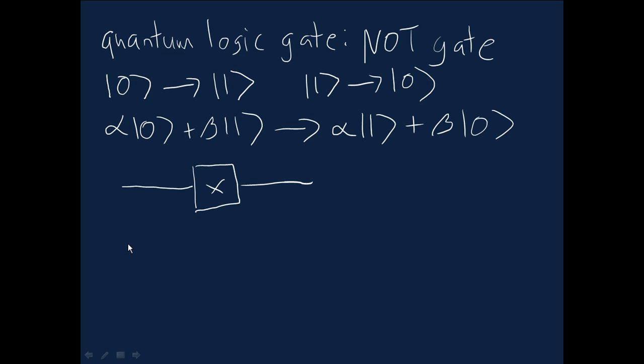Let me describe that representation. The action of the NOT gate can actually be represented in terms of this matrix, 2x2 matrix. And to see why that's the case...